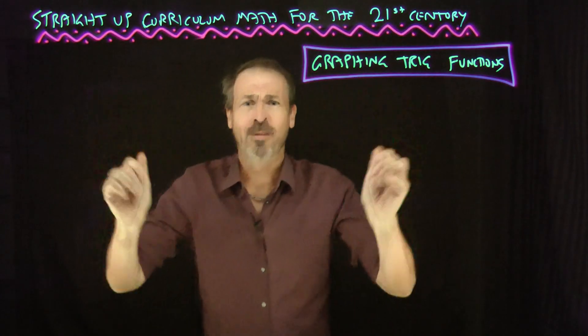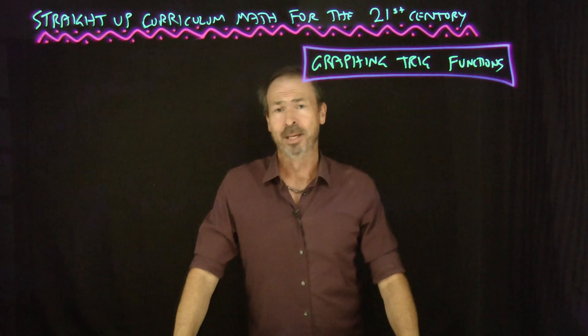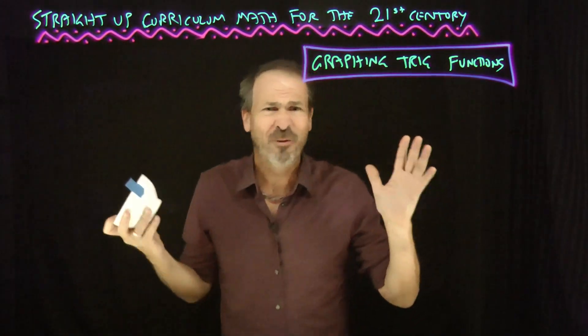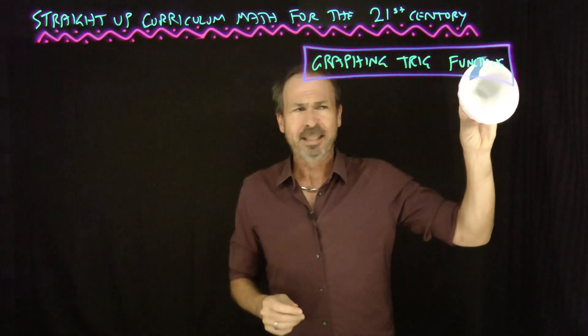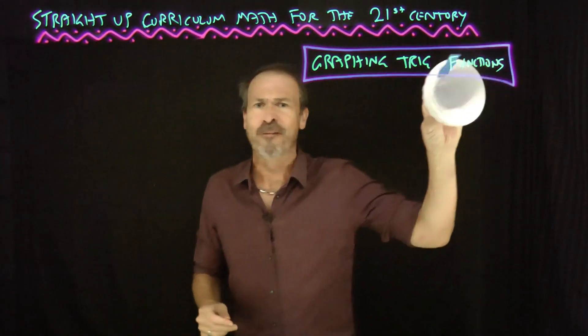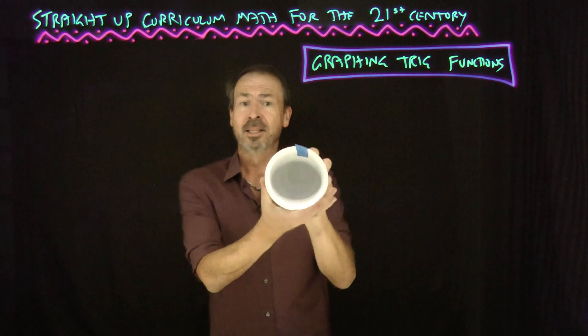But before I do that, let me motivate why we even want the graph of y equals sine of x. Why would one even care about this? Well, it really comes from this. In the universe, there's probably only really two fundamental types of motion going on. We can see things moving in straight lines - linear motion. And another fundamental type of motion would be circular motion, where things spin around.